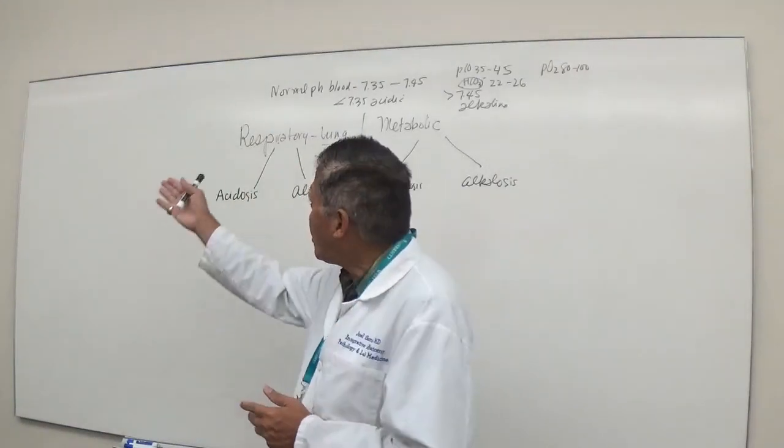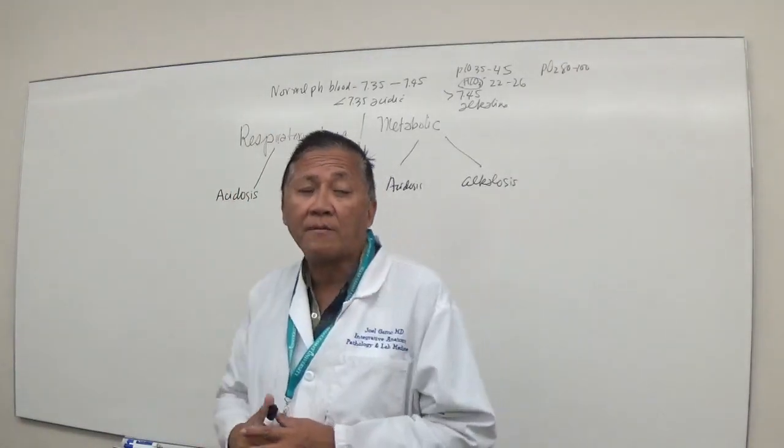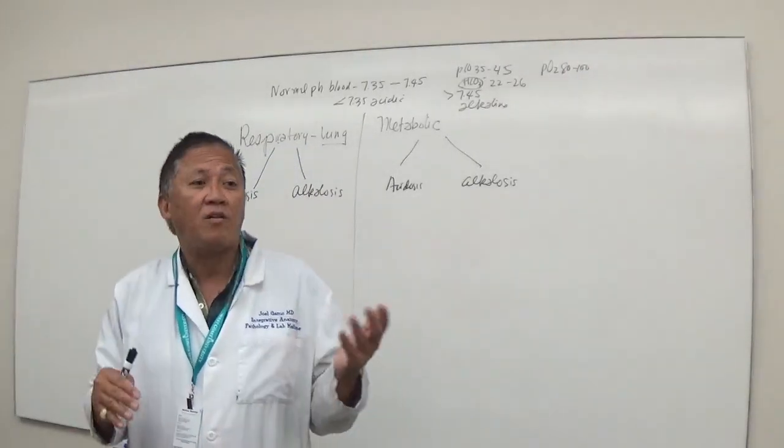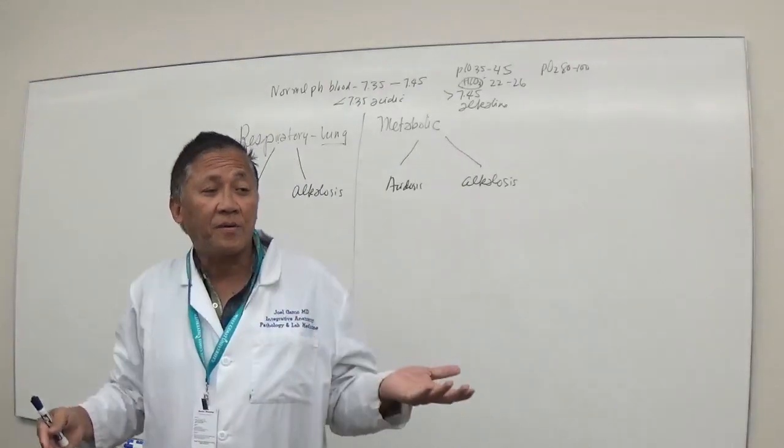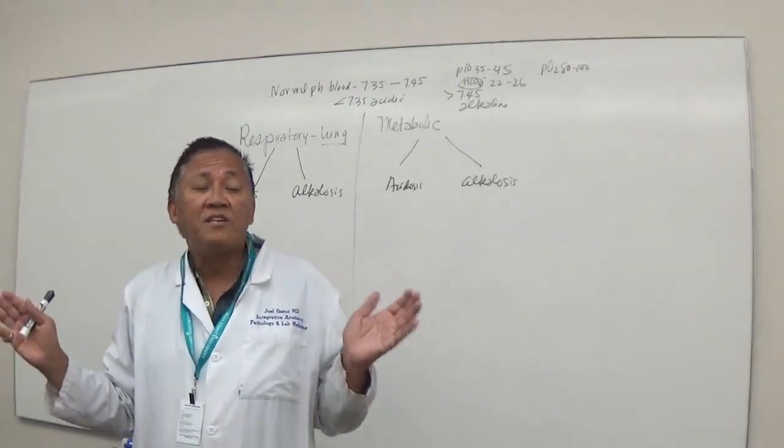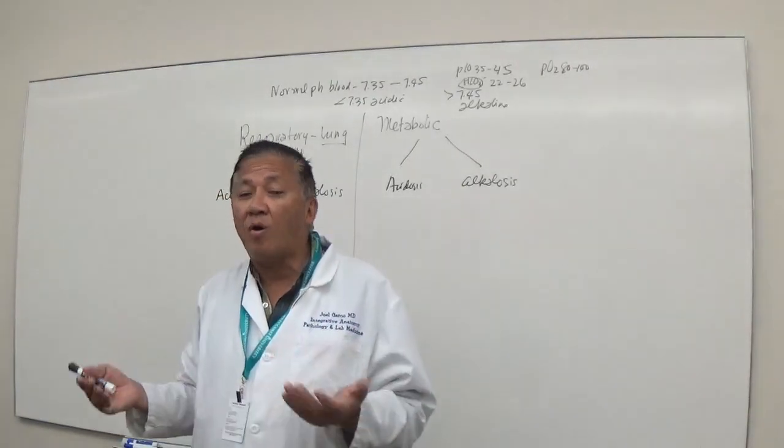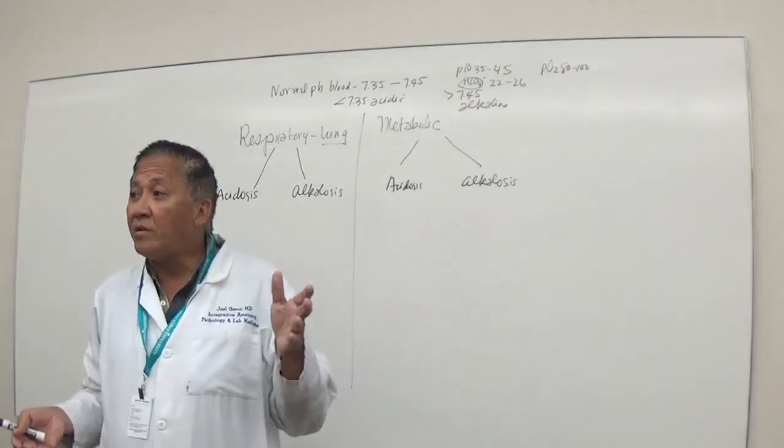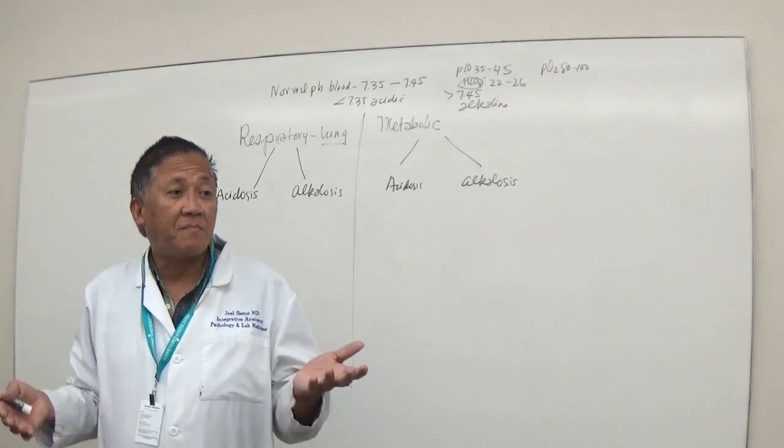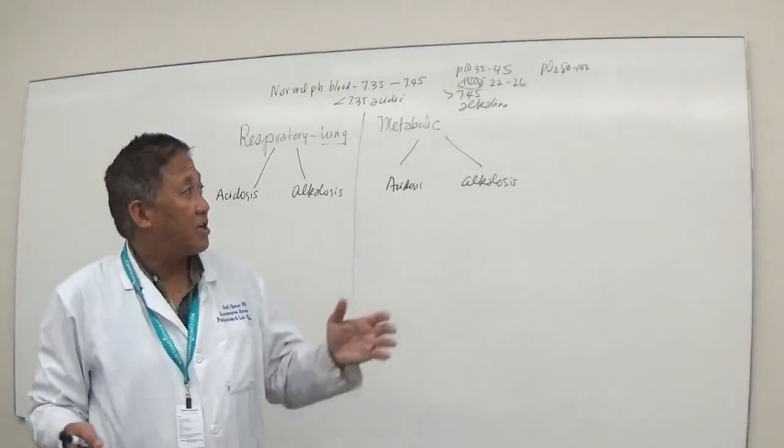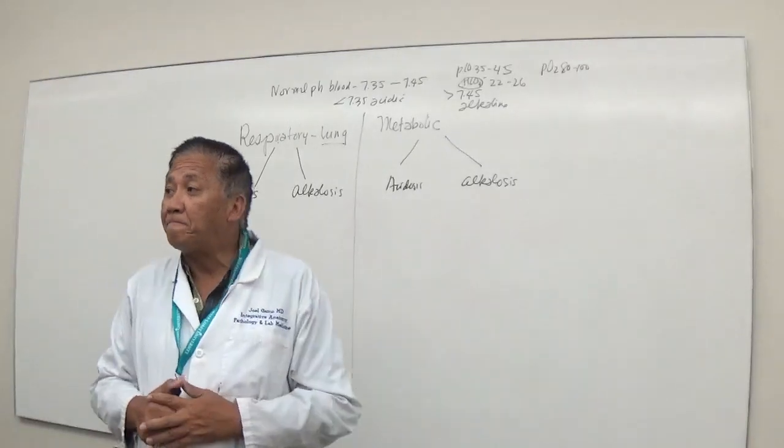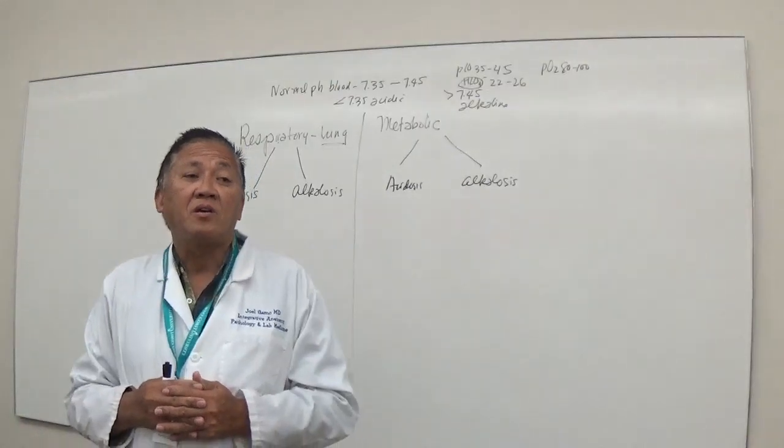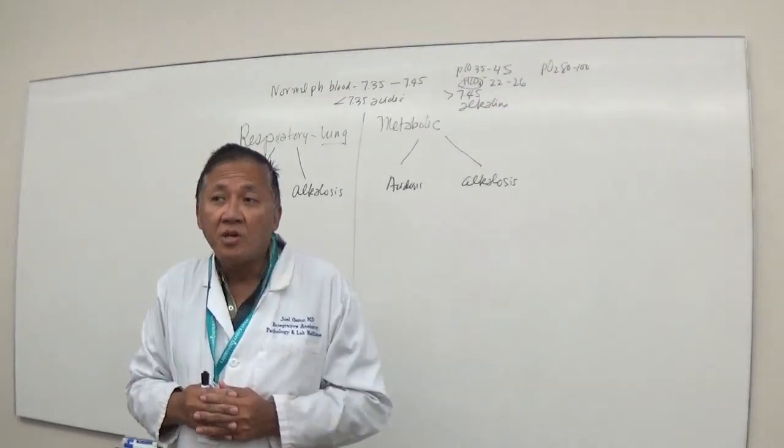It could either be respiratory or metabolic. The general rule here is that if it involves the lung, then it's respiratory. Any other organ systems like stomach, small and large intestine, pancreas, rectum, or endocrine organs like when you have diabetic patients which does not involve the lung, is considered metabolic.